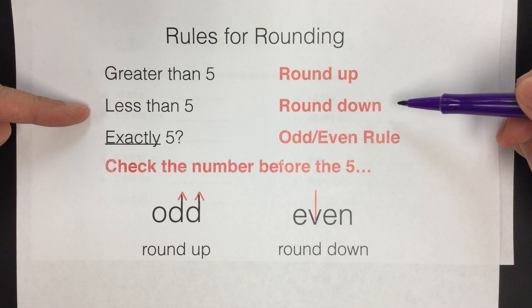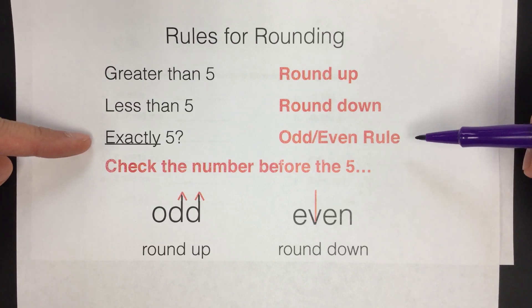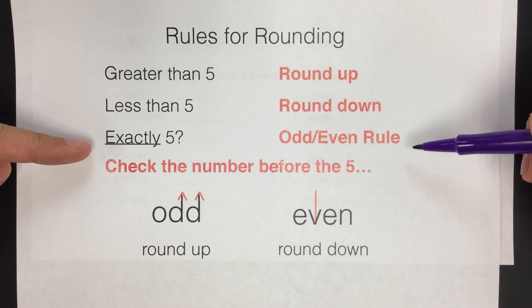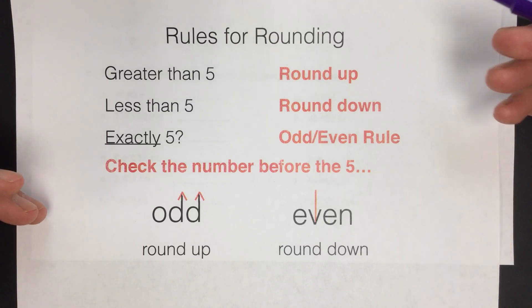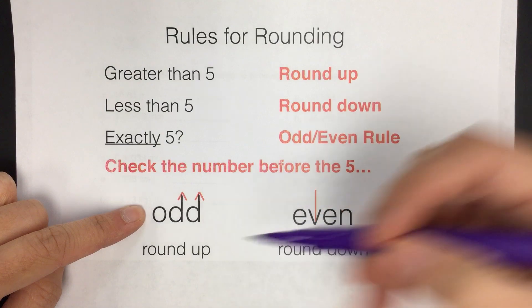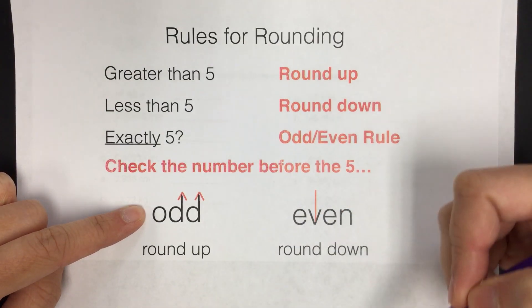The thing that's different here is that when a measurement is exactly between the two values that you're trying to round to, you need to use the odd even rule. Which means that you need to look at the number before the five, and if that number is odd, you'll round it up. If the number is even, you'll round it down.